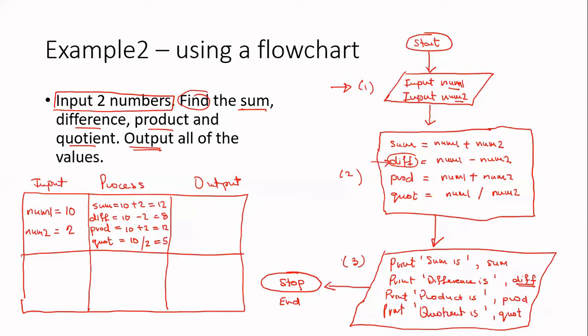We move on to box three. And we're going to print sum is, and the placeholder, sum, which is 12. And if I've got 10 and 2, I expect to get 12. Then difference is, difference is 8. 10 and 2, the difference is 8.